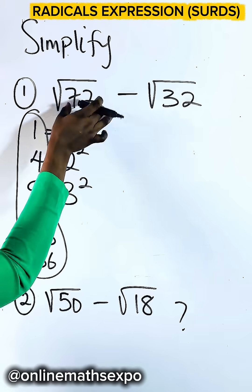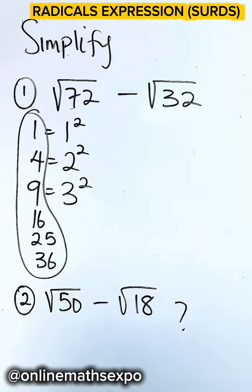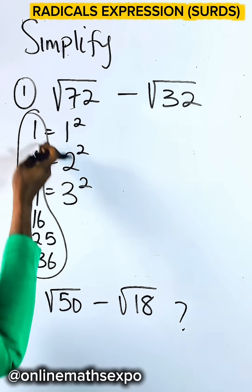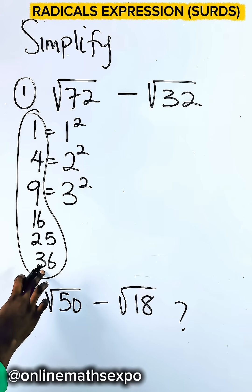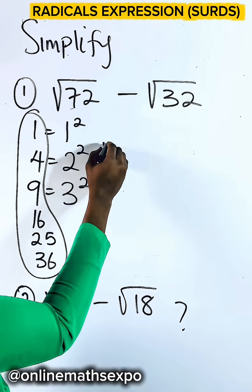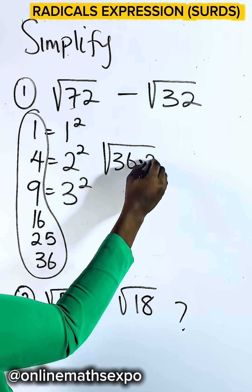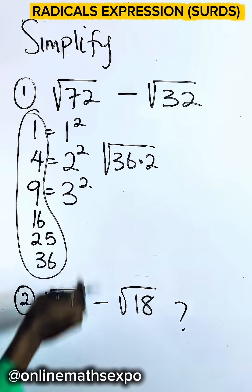So to simplify this, let's bring out the highest square number in it. For 72, you see that the highest you can get is 36 because 36 multiplied by 2 gives you 72.